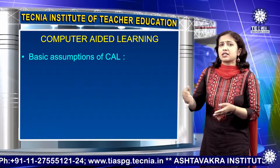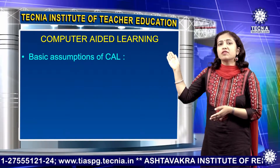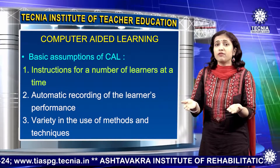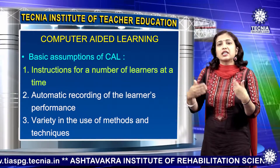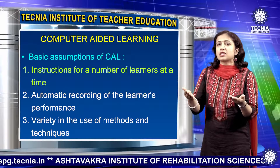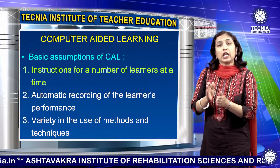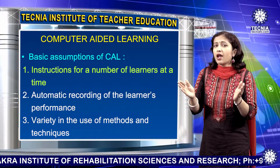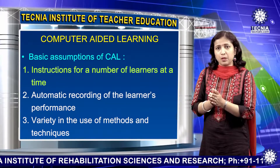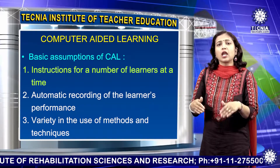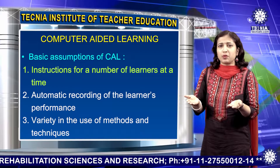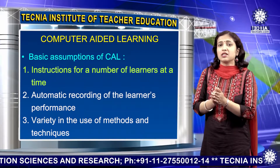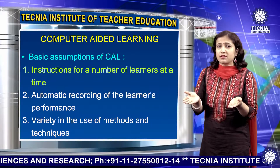Now let us discuss basic assumptions of CAL. It can provide instructions for a number of learners at a time — it can serve thousands of learners simultaneously in an individualized way. According to his ability and interest in a particular subject or topic, an individual can get the needed instructional material and help from the computer.